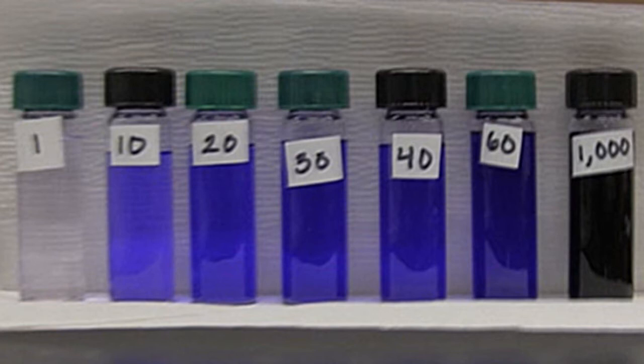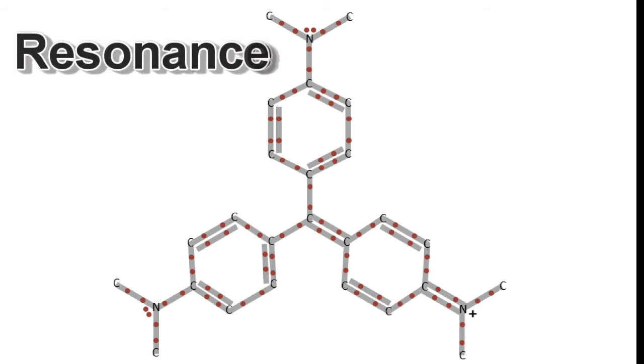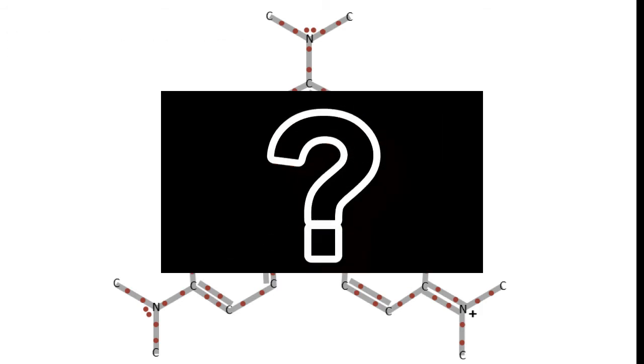So what is it about the crystal violet molecule that makes the solution so very violet? The answer can be found in its structure. An interesting aspect of crystal violet structure is the fact that its entire structure is in resonance. Now you may be asking yourself, what is resonance?